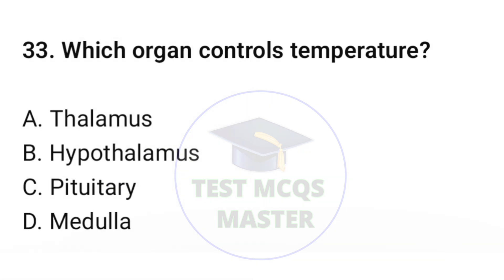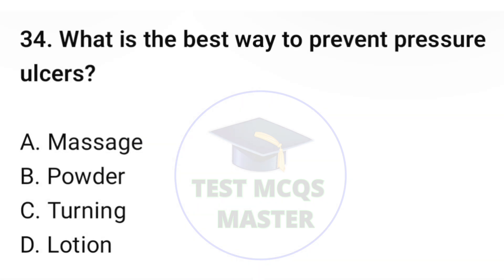Question number thirty-three: Which organ controls temperature? The correct option is B: hypothalamus. Question number thirty-four: What is the best way to prevent pressure ulcers? The correct option is C: turning.